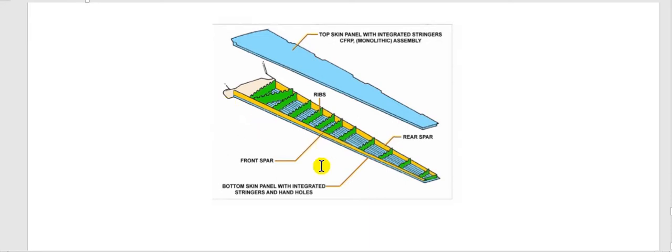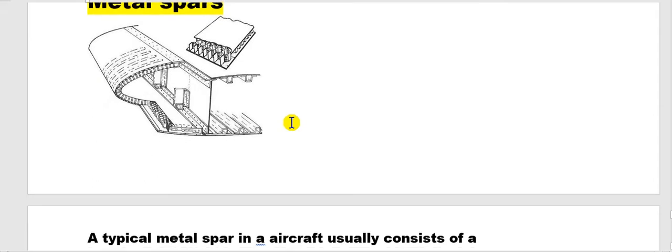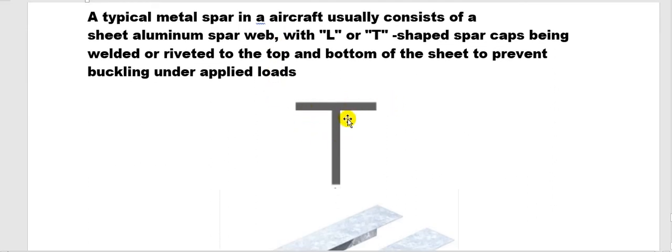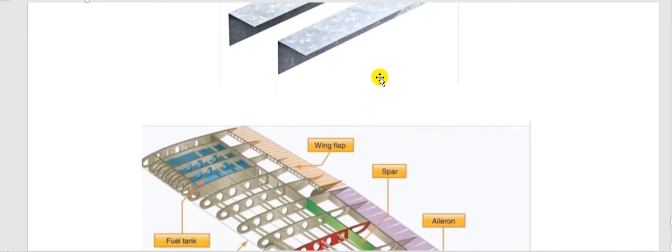This is the upper skin and this is the lower skin. Here are the ribs. The rib has an upper cap and a lower cap, and between them is the metal sheet. Between the upper and lower is the sheet of metal.